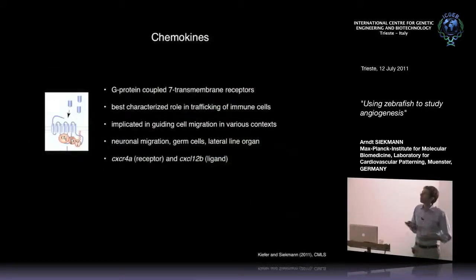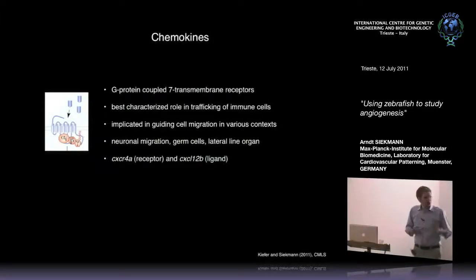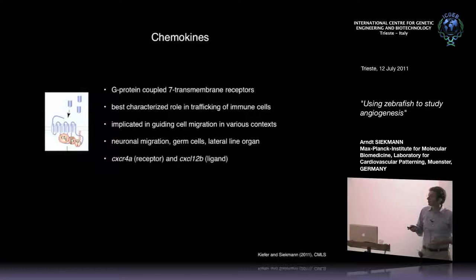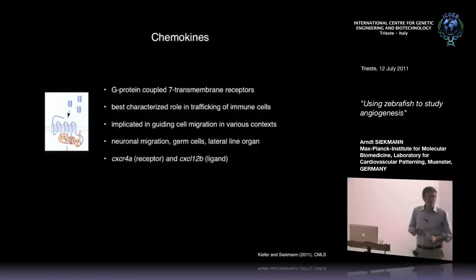What is CXCR4A? It is a chemokine receptor - a G protein coupled transmembrane receptor first studied for its role in immune cell trafficking, but found to guide cell migration in various contexts in the embryo, including neuronal migration, germ cells, and in zebrafish, migration of the lateral line sensory organ. There are about 50 chemokines; I will focus on this CXCR4A receptor and its ligand CXCL12B, formerly called SDF1.